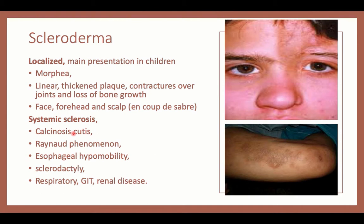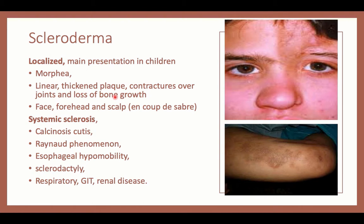Scleroderma is a rheumatological condition that, from its name, mainly affects the skin, associated with sclerosis, fibrosis, and stiffening. It can be localized — the main presentation in children — or systemic (systemic sclerosis), which is less common in children. Localized scleroderma includes morphea, a localized area of stiffened skin with loss of subcutaneous tissue. It can also be linear. If a linear lesion crosses a joint, it results in contractures, impaired bone growth, and even limb length discrepancy. If occurring in the face, forehead, and scalp, it is called en coup de sabre.